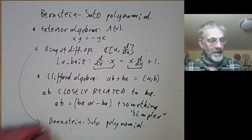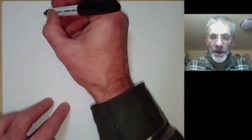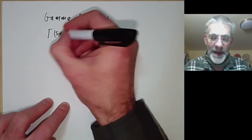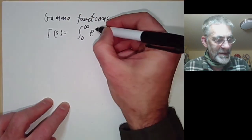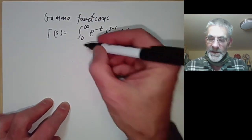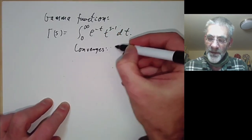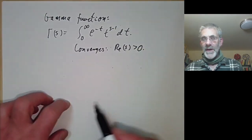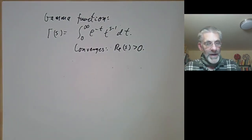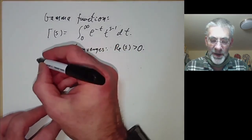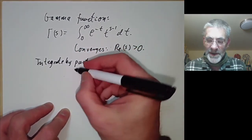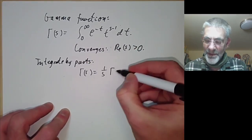This is Joe Bernstein. Let's explain what the Bernstein polynomial is by looking at the gamma function. As everybody knows, the gamma function Γ(s) is the integral from zero to infinity of e^{−t} · t^{s−1} dt. This converges for the real part of s greater than zero, and if the real part of s equals zero, this bit diverges near zero. However, you can analytically continue the gamma function by integrating by parts.